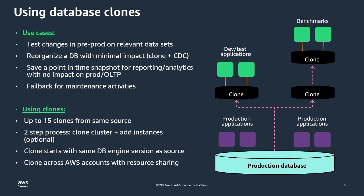Another use case is reorganizing a database with minimal impact. For example, if you've determined that a new index is a good idea but don't want to deploy it directly to production because it will be a blocking change preventing other queries from executing, you can create a clone, add the index, and then use CDC — such as a bin log — to stream changes from your primary cluster to the new cluster, then do a failover, essentially a blue-green deployment.